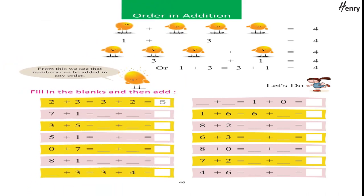Order in addition. One plus three equals four; three plus one equals four. Or, one plus three equals three plus one equals four. From this we see that numbers can be added in any order. Let's do: fill in the blanks and then add.